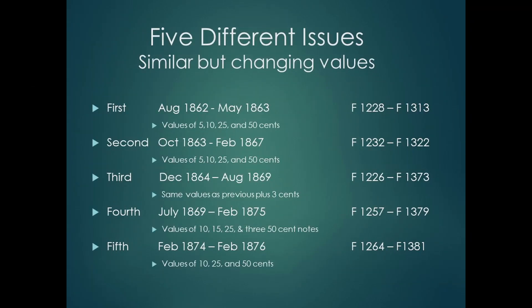There are five different issues of fractional currency, and each issue has similar values for the notes. But the designs for each issue are completely different. The design changes were mostly done to prevent counterfeiting. Fractional notes were at first viewed as temporary emergency money, but as people got used to using them, the notes became popular, and hung on until 1876.